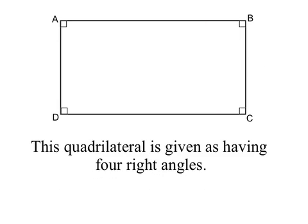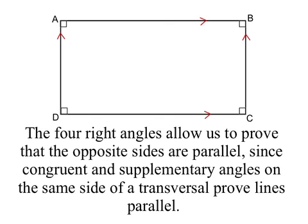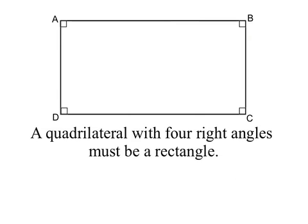So now we're given a quadrilateral that has four right angles. The four right angles allow us to prove that the opposite sides are parallel, since congruent and supplementary angles on the same side of a transversal prove lines parallel. Therefore, if you're given a quadrilateral with four right angles, you know it must be a rectangle.